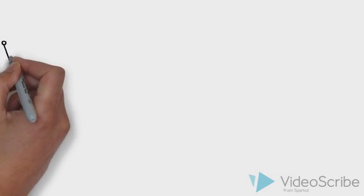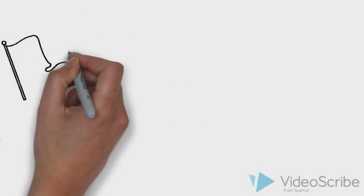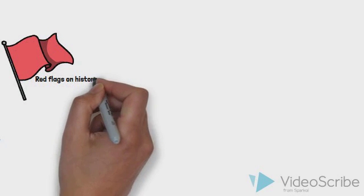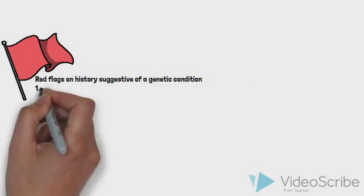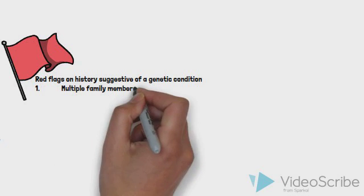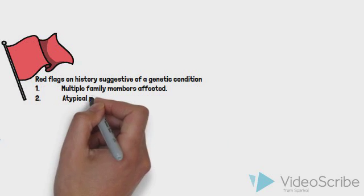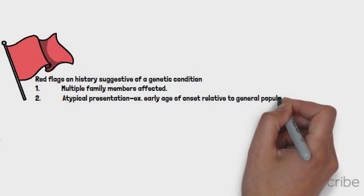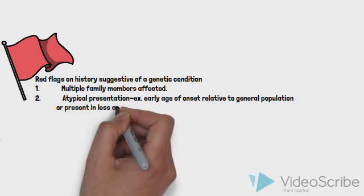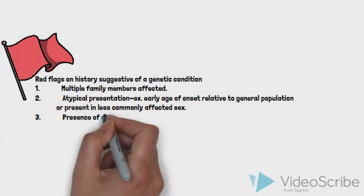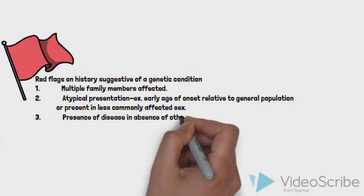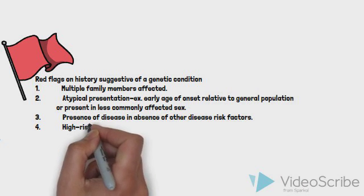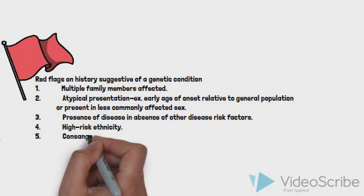Your preceptor points out that there are certain key features of a family history that can be considered red flags suggestive of a genetic condition within a family. Some of these red flags include: 1. Multiple family members affected. 2. Atypical presentation — for example, an early age of onset relative to the general population, or disease present in a less commonly affected sex. 3. Presence of disease in the absence of other disease risk factors. 4. High risk ethnicity. 5. Consanguinity.